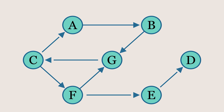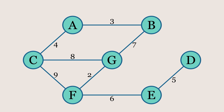A graph can either be weighted or unweighted. The graph on the screen is an example of an unweighted graph, where there is no cost associated with moving from one node to another. A weighted graph, however, has a specific weight or cost assigned to each edge, representing the cost of moving between nodes.